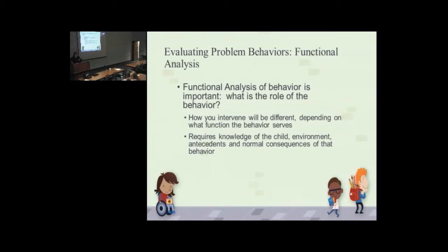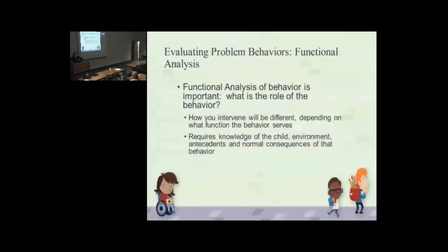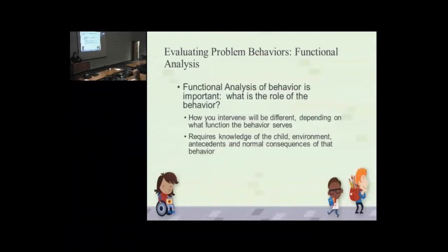The antecedents and consequences. So what that means in basic English is you want to know what happens right before the behavior, and you want to know what happens right after the behavior. That's at a bare minimum. You need to know that. What's happening right before it occurs and what happens right after it occurs. And that will at least give you a start to understand.